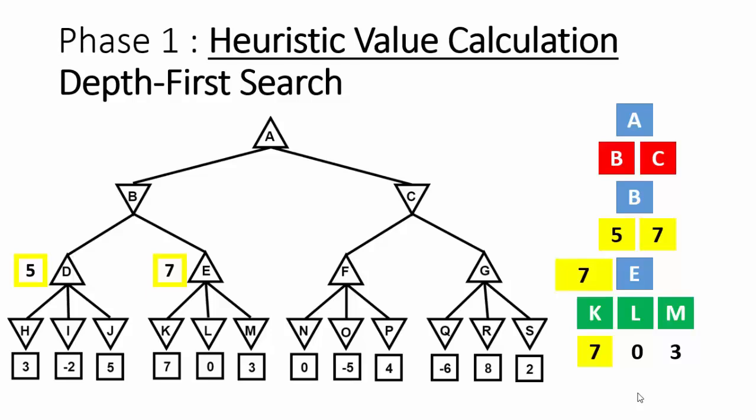After calculating the heuristic values for nodes D and E — the children of node B — we can easily calculate the heuristic value of node B. Because node B represents a Min player, and a Min player tries to minimize its score, it selects the minimum heuristic value of its children. The minimum of 5 and 7 is 5, so node B's heuristic value is 5, and this value is placed on the tree.